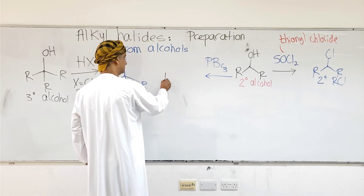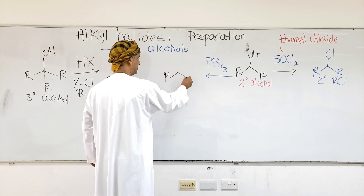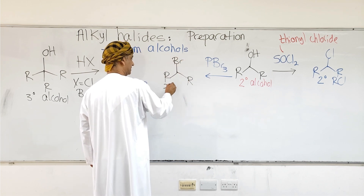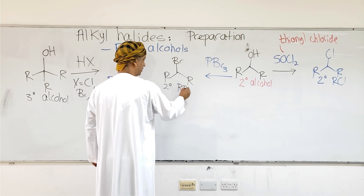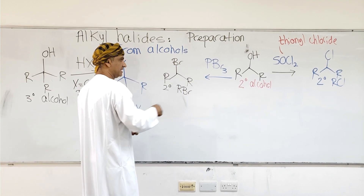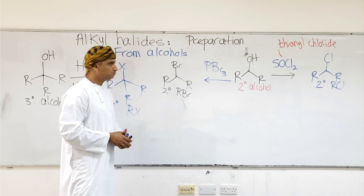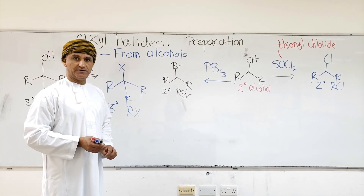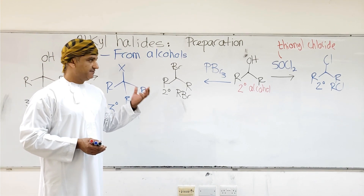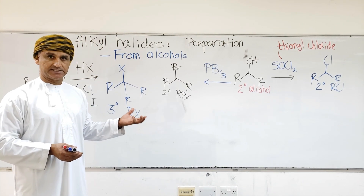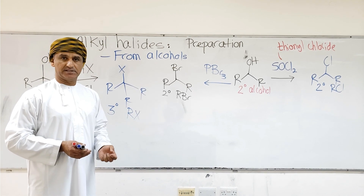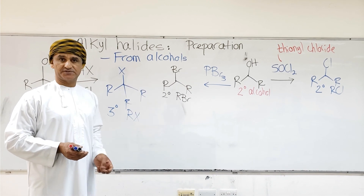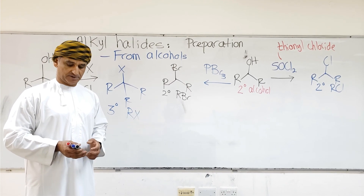This is the structure of the product — the secondary alkyl bromide. PBr3 is phosphorus tribromide. So that's how secondary alcohols are converted into alkyl halides. If an alkyl chloride is desired, then thionyl chloride is used. If an alkyl bromide is desired, then phosphorus tribromide is used as the reagent.